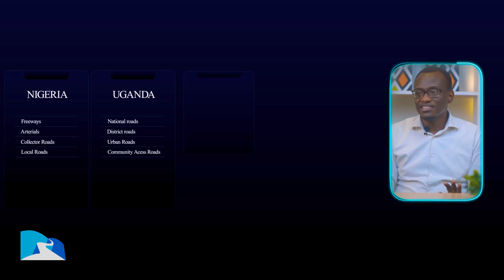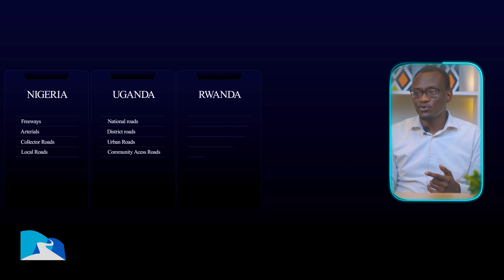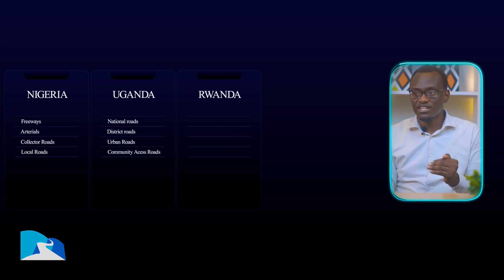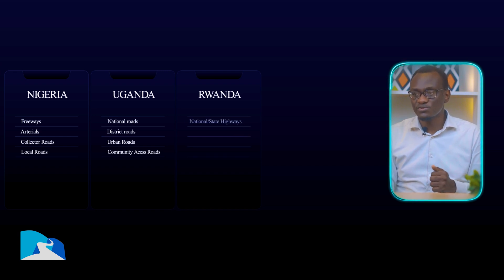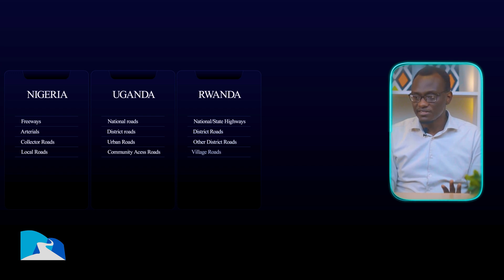What about Rwanda? Rwanda benchmarked from Uganda, so they have a very similar system. Rwanda has national roads, district roads, urban roads, and the lowest level is called community access roads.